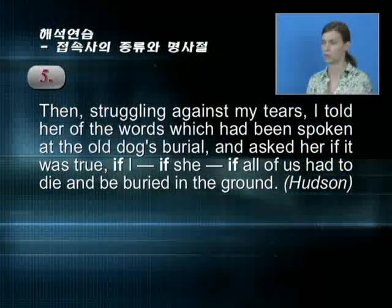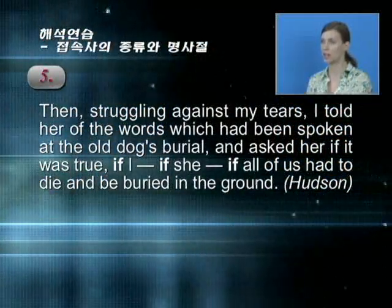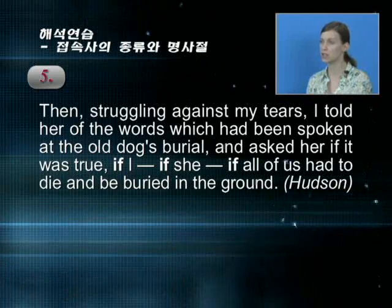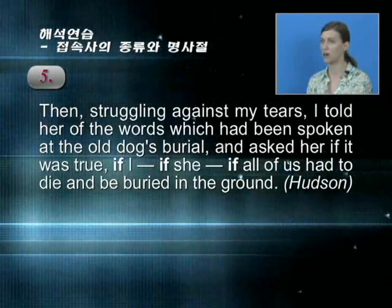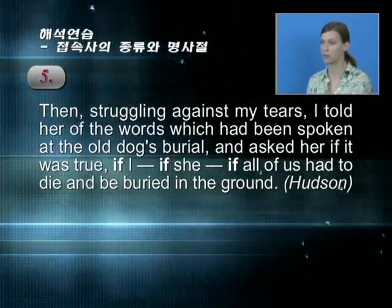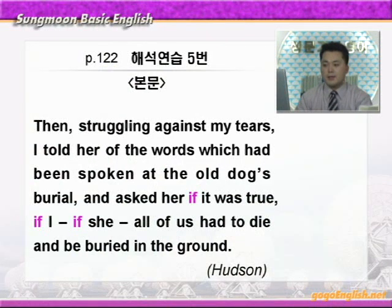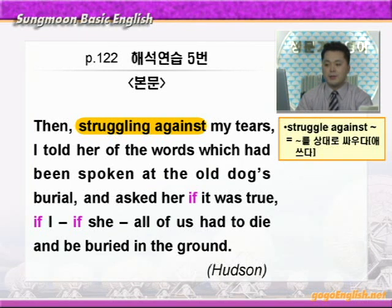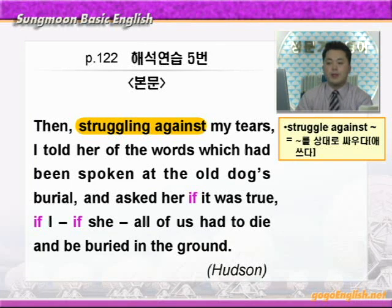다음 5번으로 가겠습니다. 그럼 같이 해석해 보겠습니다. 'then, struggling against my tears' — struggling against에 동그라미 쳐보세요. struggle은 싸우다, 애쓰다 이런 뜻이니까 'struggle against 뭐뭐'는 '뭐뭐를 상대로 싸우다, 애쓰다' 이런 뜻이 되겠습니다. tear는 눈물 이런 뜻이니까 'struggling against my tears' — 내 눈물을 상대로 싸우면서, 다시 말해 나는 눈물을 참으려고 애쓰면서. 여기 struggling은 동시동작을 나타내는 분사구문이 되겠습니다.